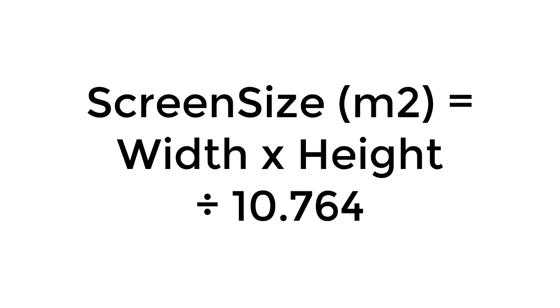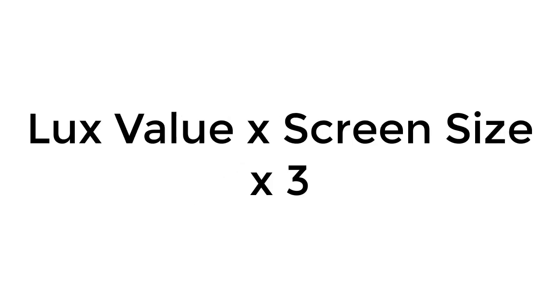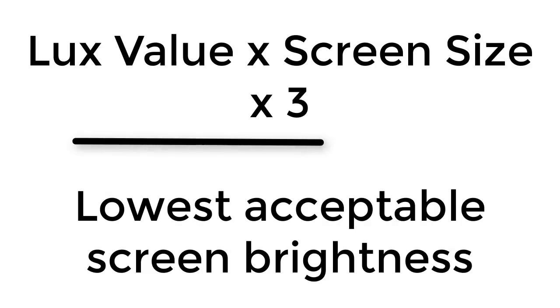You multiply the lux value by the number of square meters in the screen — just multiply the screen width by the height and divide by 10.764 — then multiply by the lux reading. Multiply this number by 3. This is the lowest lumens value that would be acceptable for a projector on a screen with a gain of 1, assuming no ambient light will be striking the projection screen.